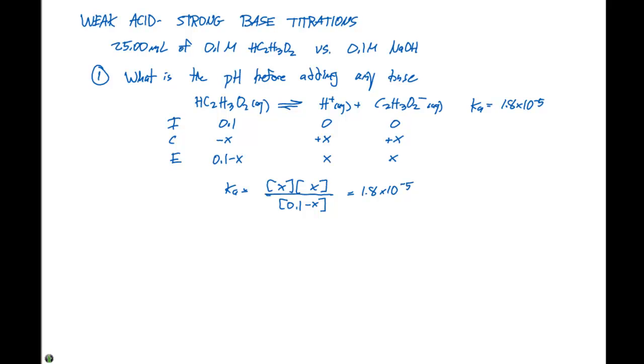If we use our approximation, we can say that x squared divided by 0.1 is roughly equal to 1.8 times 10 to the minus 5. This will give us a value of x that'll equal 1.32 times 10 to the minus 3.